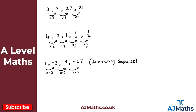The only thing left to discuss is the formula for the nth term of a geometric sequence. We use the notation uₙ, and for a geometric sequence the nth term is given as uₙ = arⁿ⁻¹. Here, a is the first term, just like in an arithmetic sequence, and r represents the common ratio.